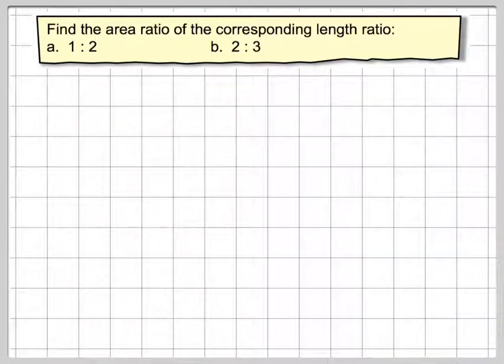Hi, in this video we're going to look at area ratio given a length ratio. So it says find the area ratio of the corresponding length ratio. A is 1 to 2 and B is 2 to 3.